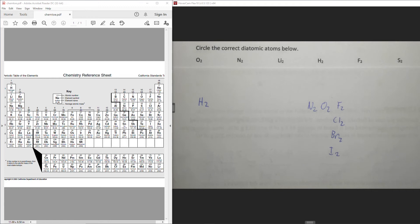like this, and the reason for that is that's how they appear on the periodic table. Hydrogen's over here, then nitrogen, oxygen, fluorine, chlorine, bromine, and iodine.